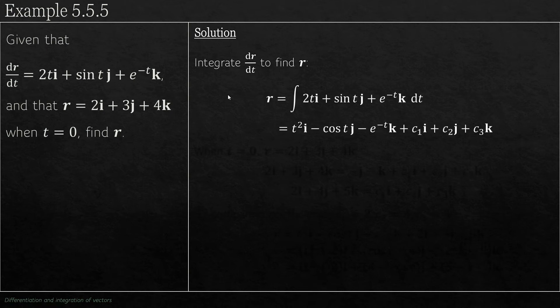So integrating each term individually: integrate 2t, we get t² (that's the i component); integrate sin t, we get -cos t (that's the j component); integrate e^(-t) and we get -e^(-t) (that's the k component).